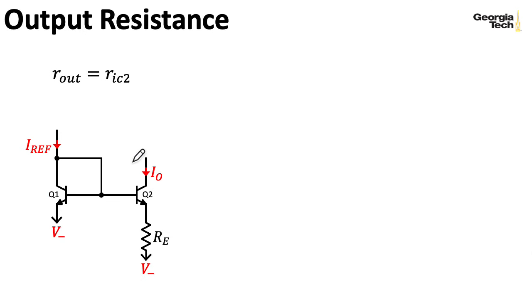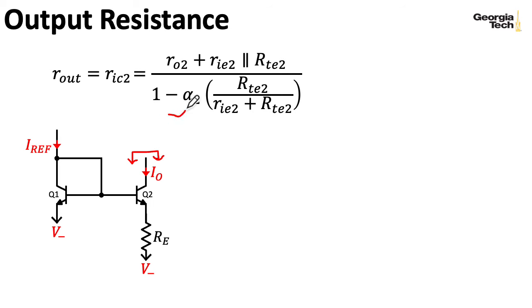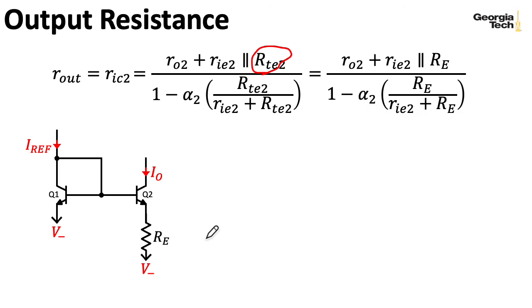So our output resistance of our current mirror is the resistance seen looking into the collector. We have a couple of formulas for that. I'm going to use the formula in terms of alphas. Notice that I am including the alpha here. I'm not assuming this is one anymore, aka I'm not assuming beta is infinite anymore, since it's just as easy to include it as not included. I need the Thevenin equivalent resistance seen looking out of Q2. Well, that is just RE. Now, I need to know what RE is. We have a couple of formulas for that. I'm going to use this one.